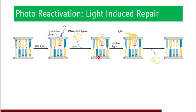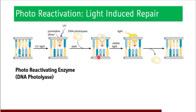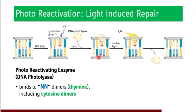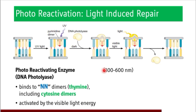DNA photolyase is a photoreactivating enzyme. It binds nucleotide dimers — that is thymine or cytosine pyrimidine dimers — and after binding, it is activated by visible light energy of 300 to 600 nanometers. A special point of mention here is that the damage is caused by UV light, but the correction or repair process is activated by visible light energy.